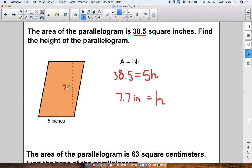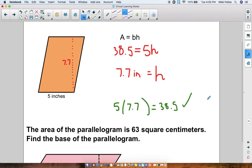And of course, you can go back and double check your answer by making sure that when you multiply the base and the height, when you do 5 times 7.7, make sure that equals 38.5. And it does. So we are good. We double checked.